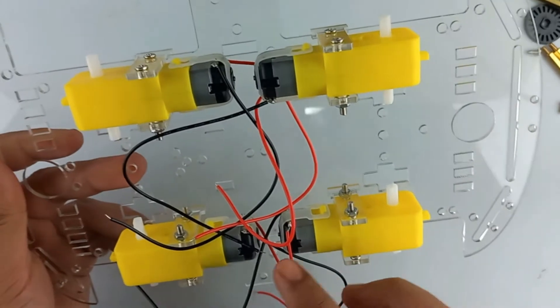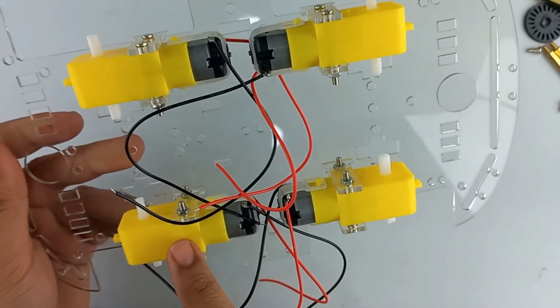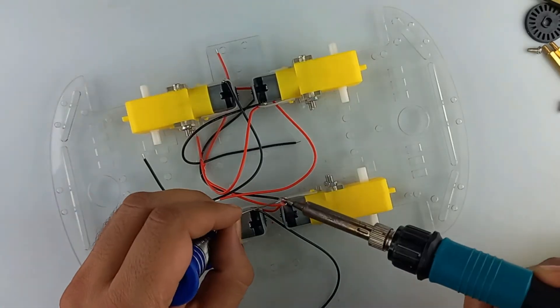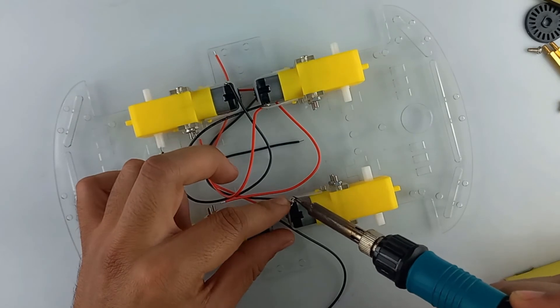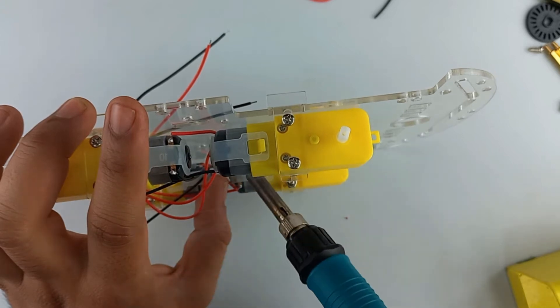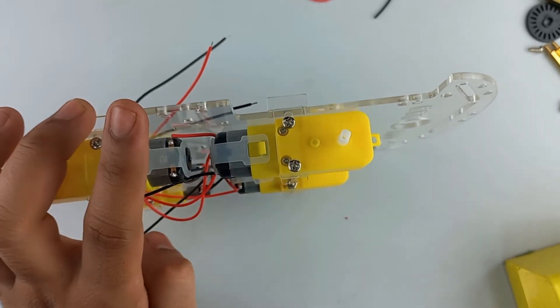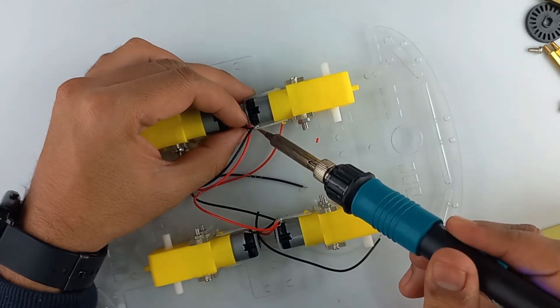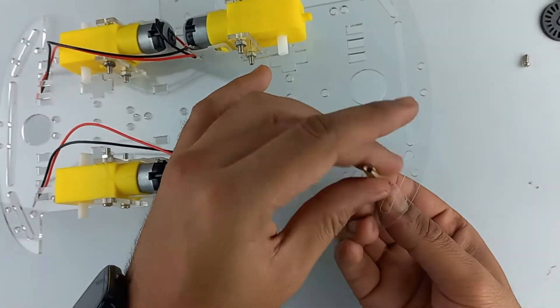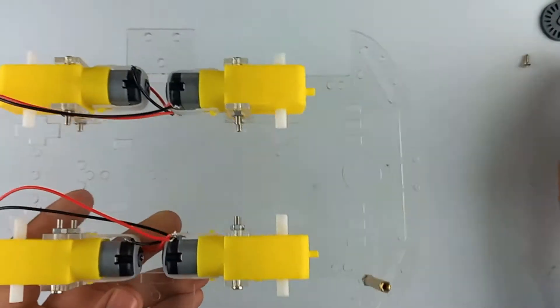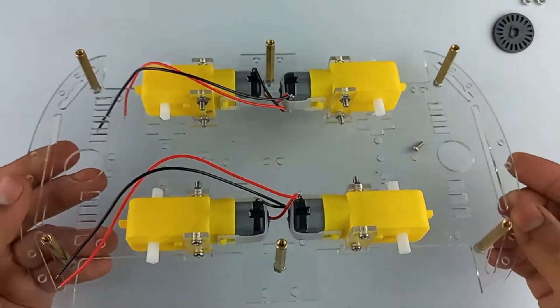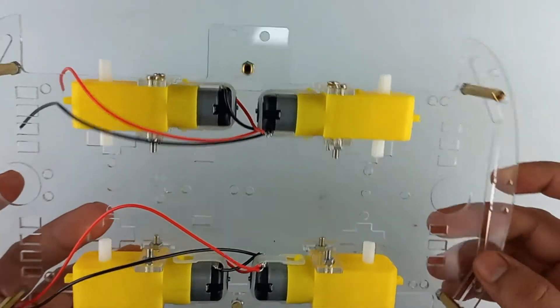Now solder these wires in such a way that these two motors run in the same direction and these two motors run in the same direction. Now attach wheels to the robocar.